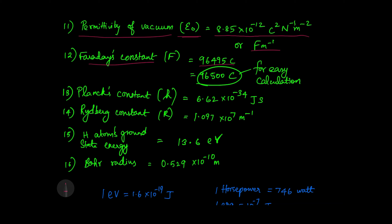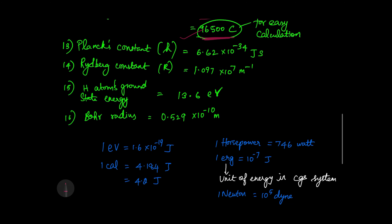Faraday's constant — the exact value is 9.6495 × 10⁴ coulombs, but for easy calculation you can use 96500 coulombs. Planck's constant is represented by h, and the value is 6.62 × 10 power minus 34 joule second.